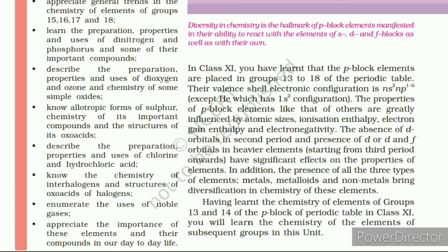The absence of d orbitals in the second period and presence of d and f orbitals in heavier elements have significant effects on the properties of elements. In addition, the presence of all three types of elements — metals, metalloids, and non-metals — brings diversification in the chemistry of these elements. Having learned the chemistry of elements of Groups 13 and 14 of the p-block periodic table in Class 11, you will now learn the chemistry of elements of the subunit.